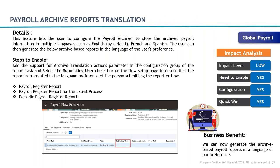Another opt-in update is Payroll Archive Reports Translation. For organizations using Oracle reports not just in English but also in French, Spanish, or other languages supported by Oracle, you can now enable this feature to have your payroll register report and payment register report available in translated form. Enable this feature if you want translated reports.